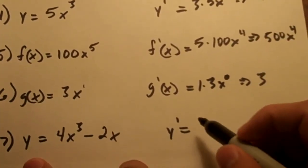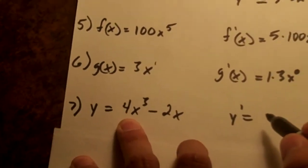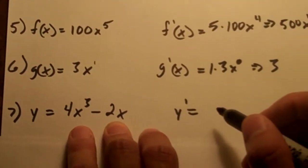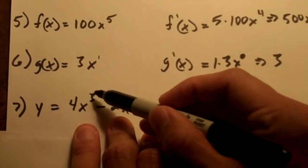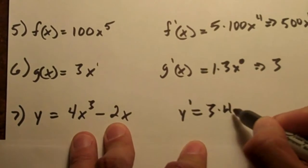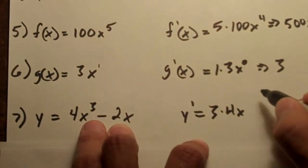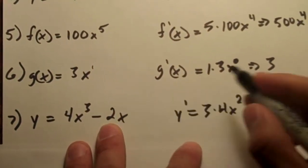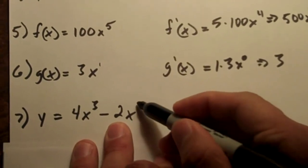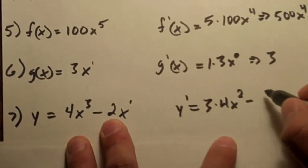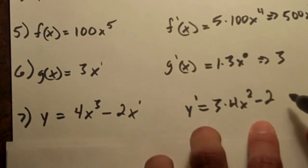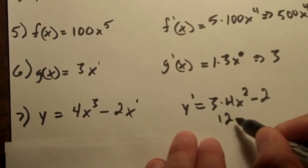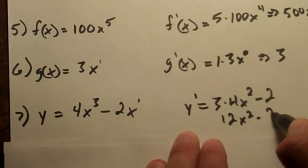Two more to go. It's the same sort of thing if you have multiple numbers in the same equation. We're going to take this first part. So 3 times the 4, x, 3 minus 1 is 2. And then do the second part, minus x to the 1. So 1 times 2 is 2, and then x to the 0 is just 1. So you're going to have 12x squared minus 2.